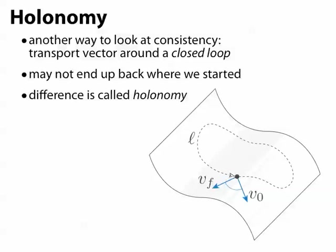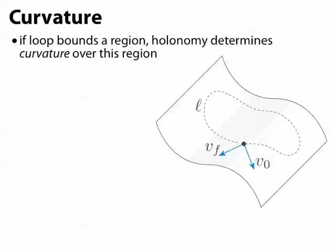In particular, if this loop bounds a region of our surface, like this dashed line on the right, then the difference in angle, the holonomy, tells us what the curvature of the connection is over the region bounded by that loop.